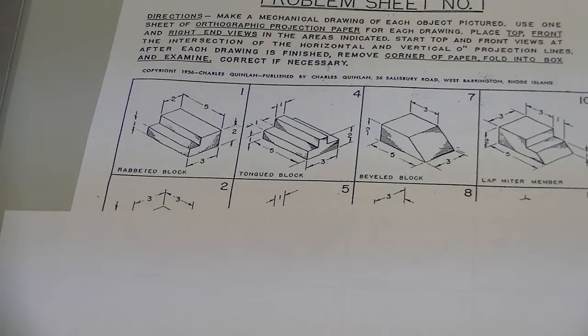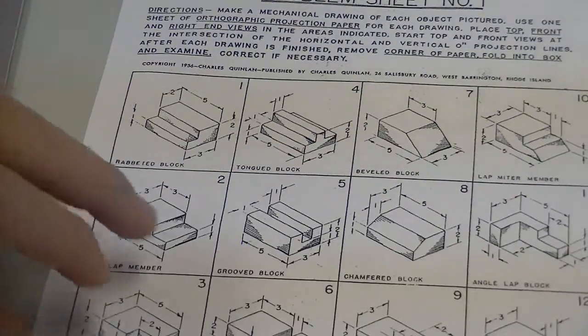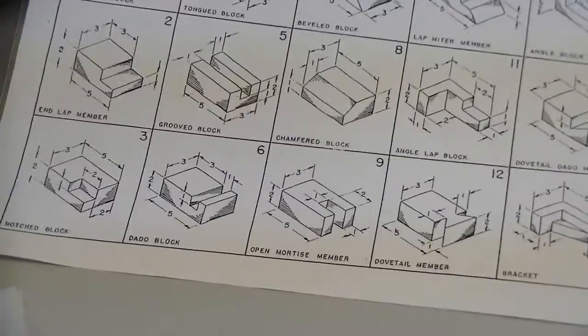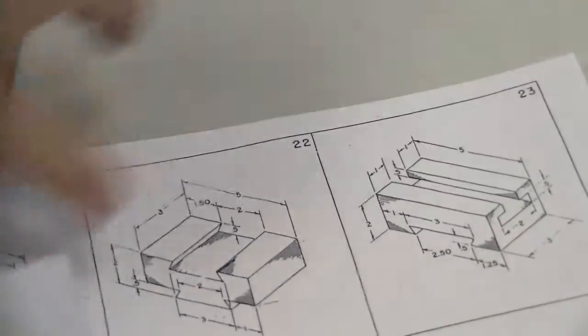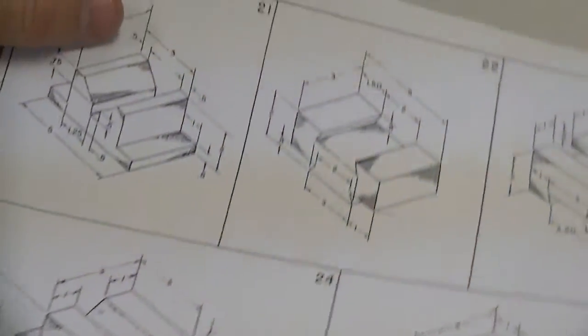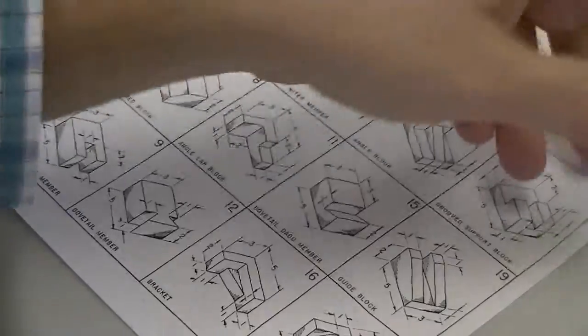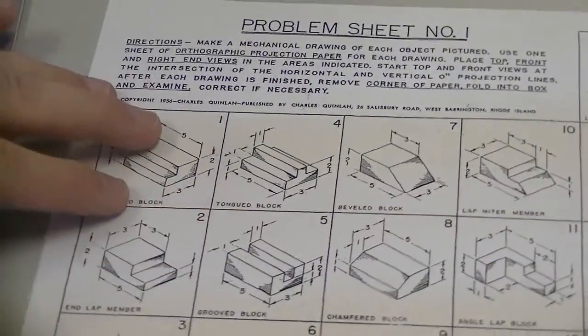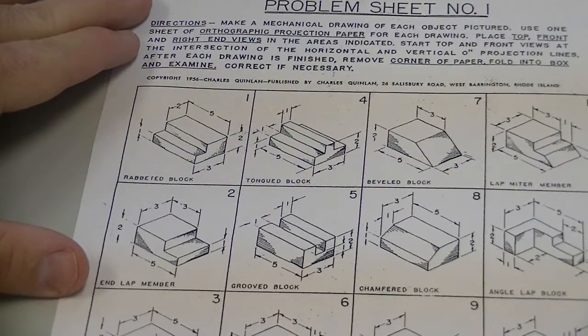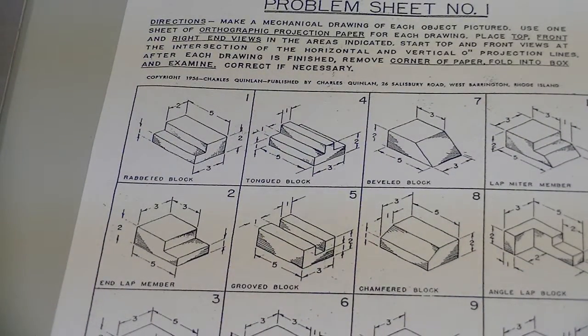Okay, here are the directions on how to do orthographic worksheet number one. As you can see, there are 20 problems on the front and another five problems on the back, so make sure that you are doing the front and the back. I'm going to show how I want these done by doing number one for you.